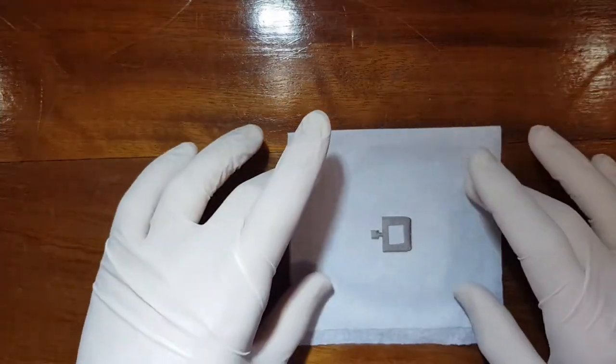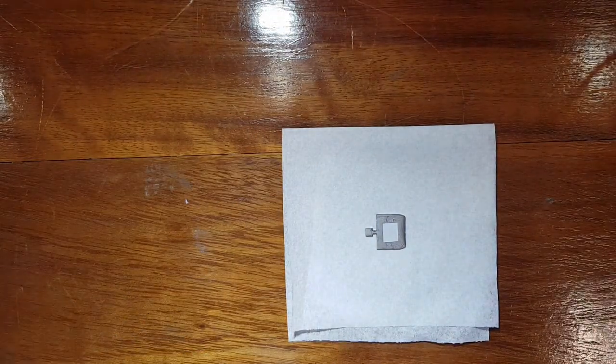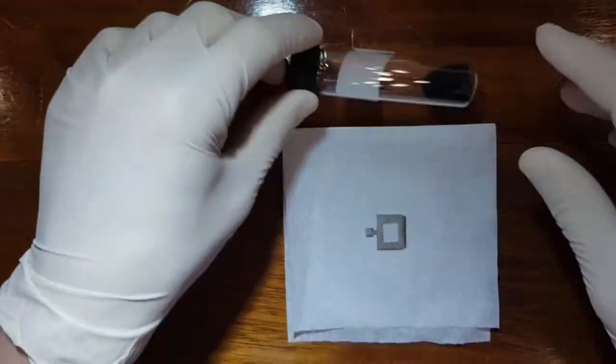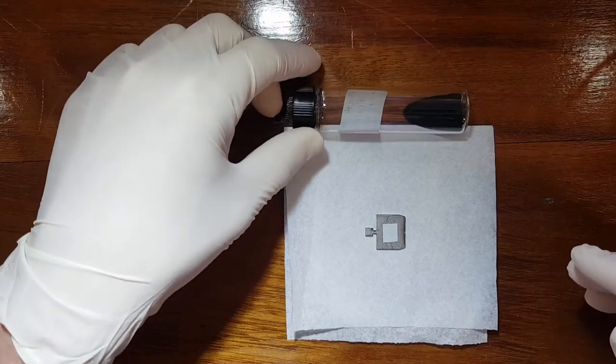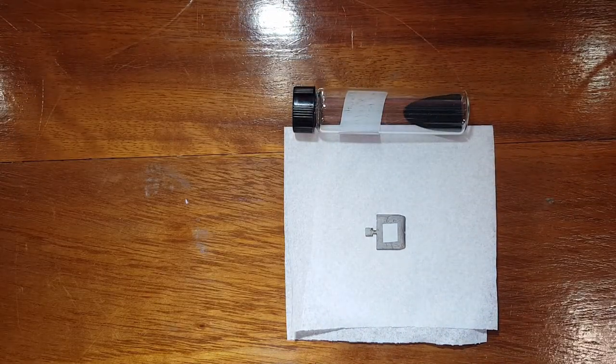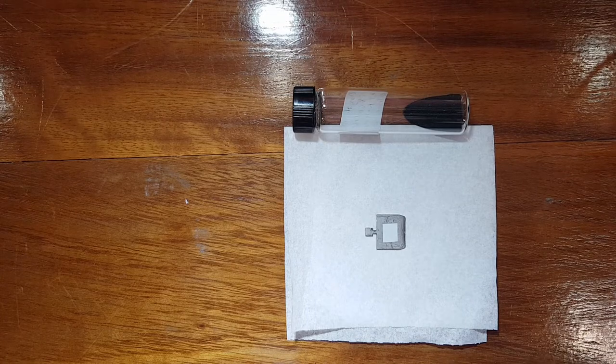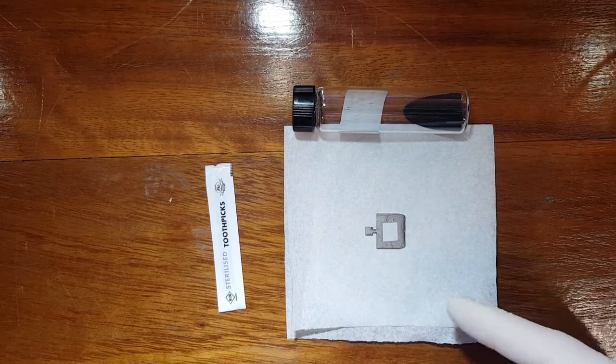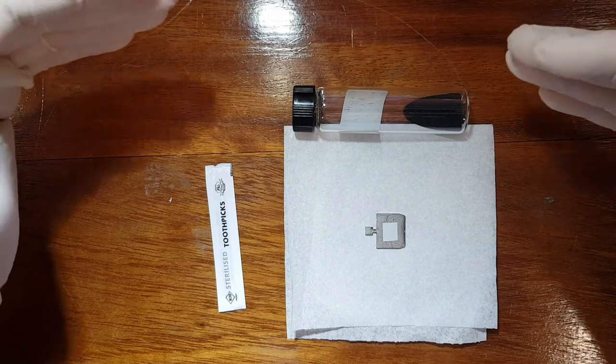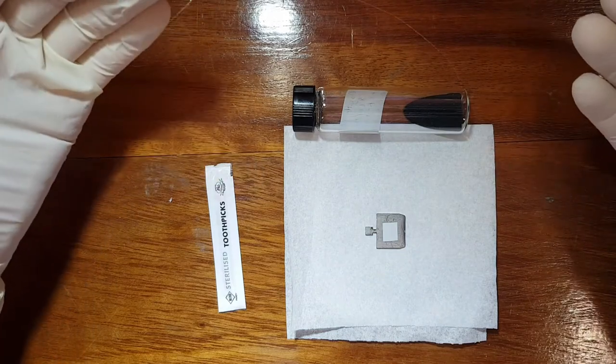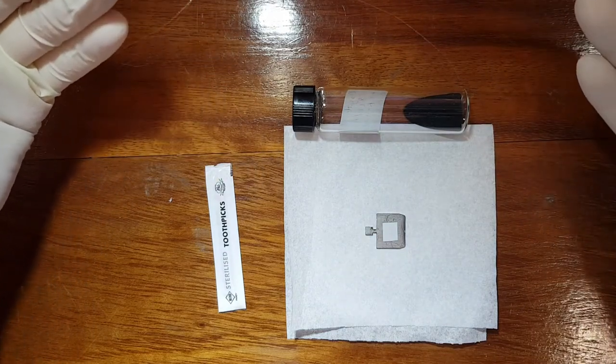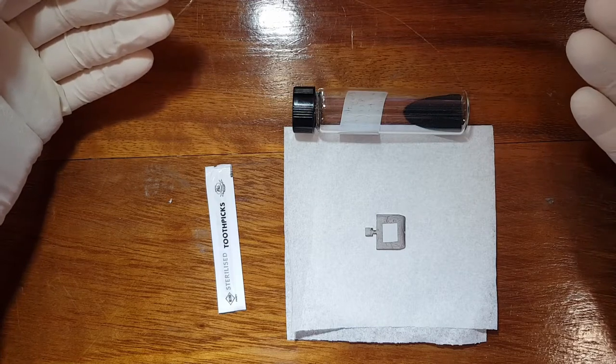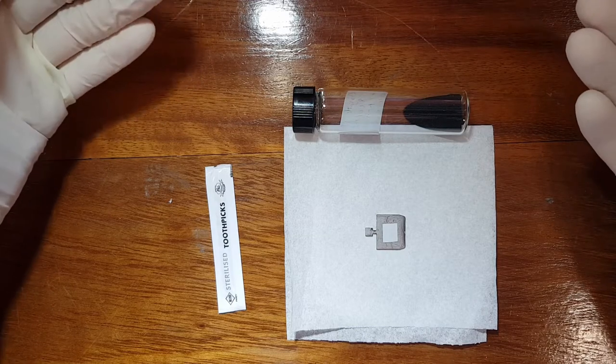Now before we begin we will obviously need the sample, which there we go, that's a sample we'll be installing onto the sample holder. And then we will also need some sterilized toothpicks. We use these just to make sure that we are distributing the sample onto the sample holder evenly. Now I suppose you could use a tweezer or you could use some other implement, but then you'll have to sterilize the implement after every mounting of a sample. And if you have a hundred samples to mount, then you're going to be in for a very long day.